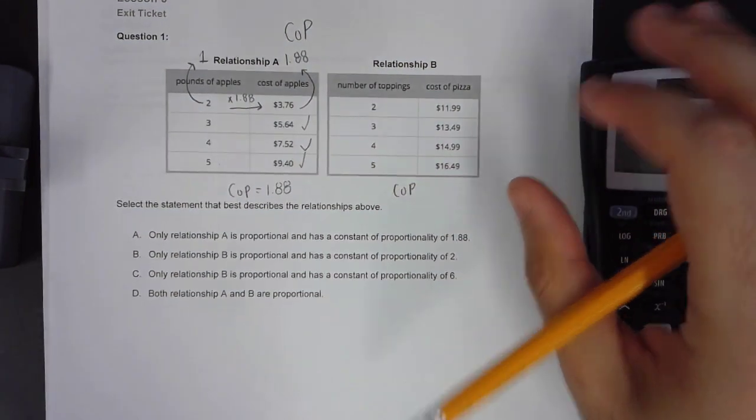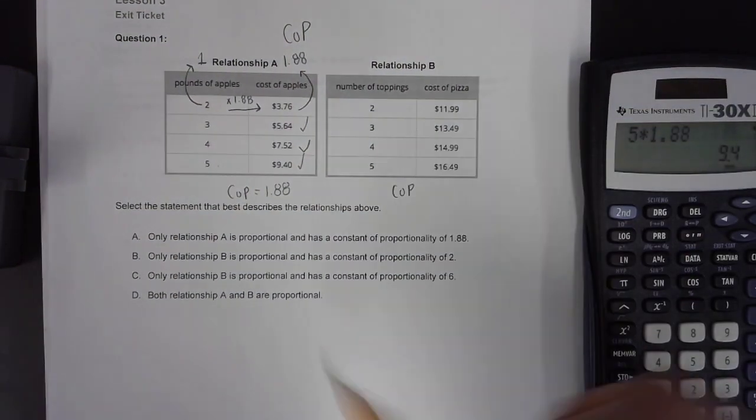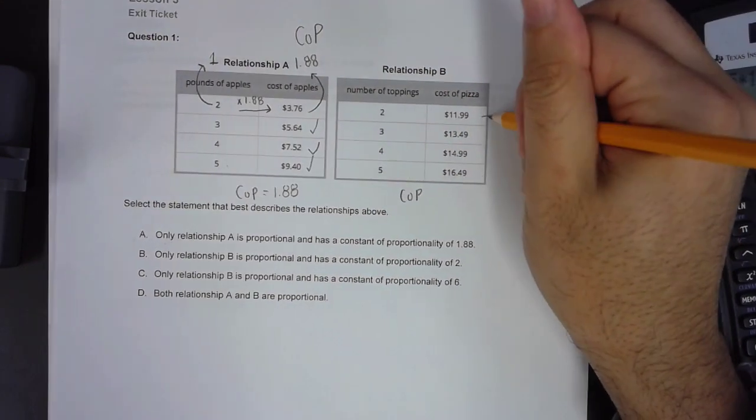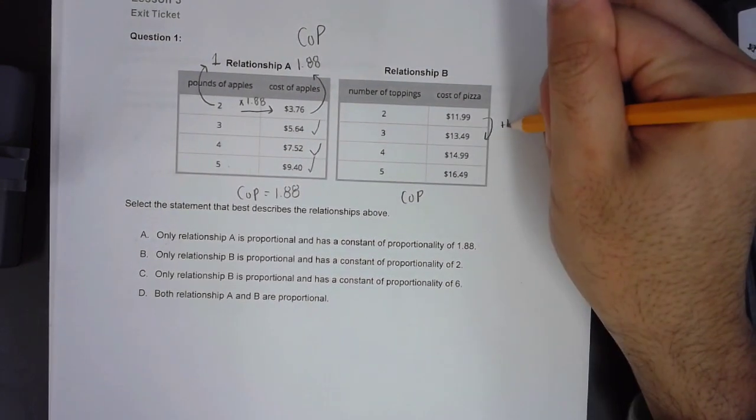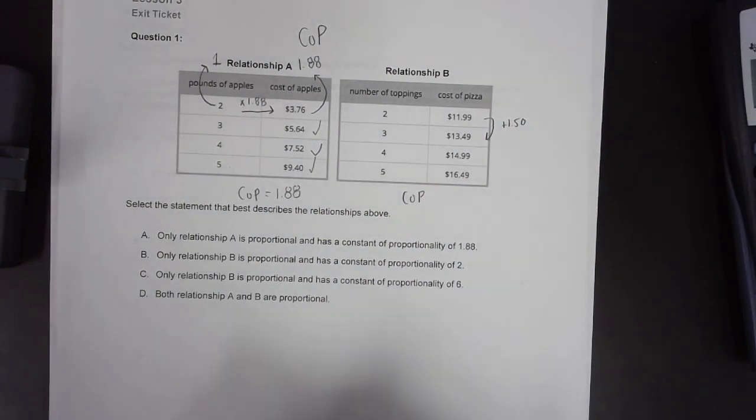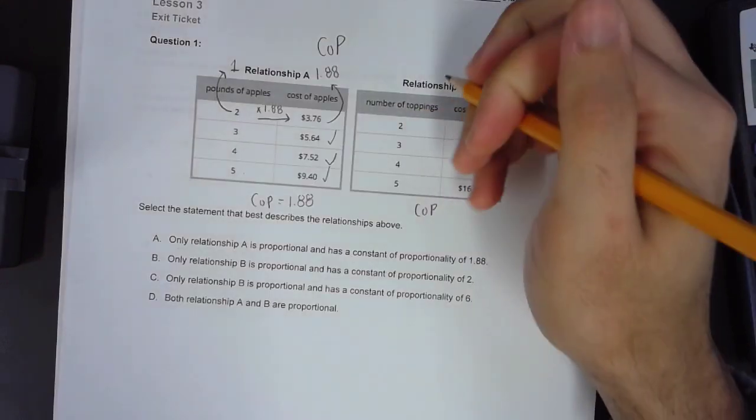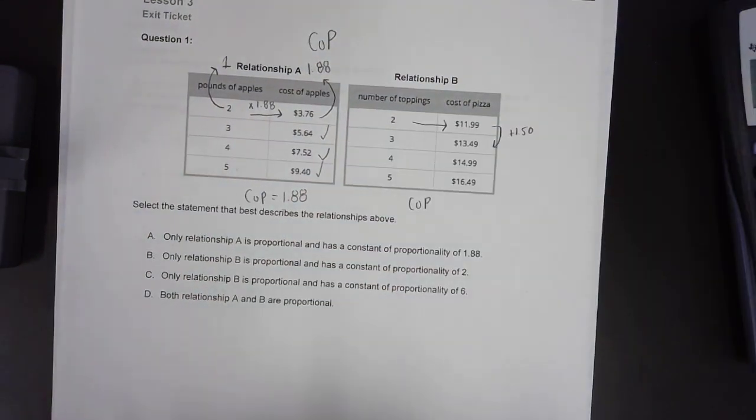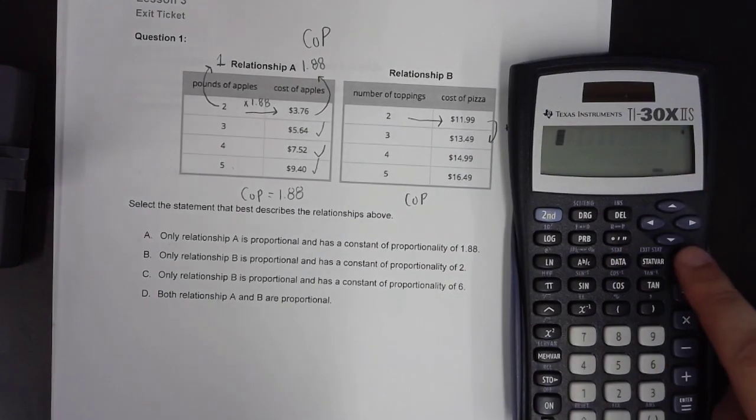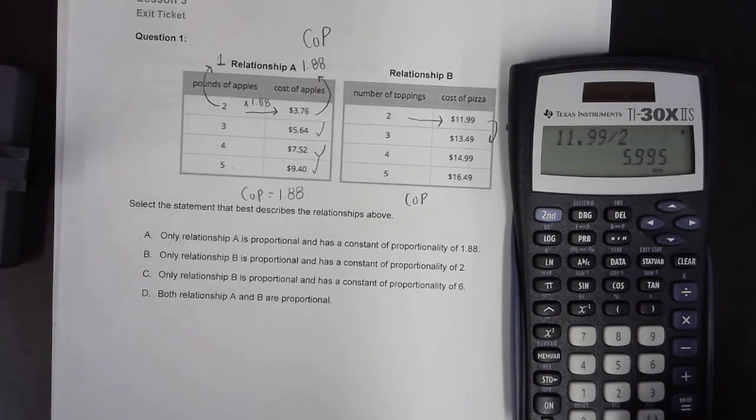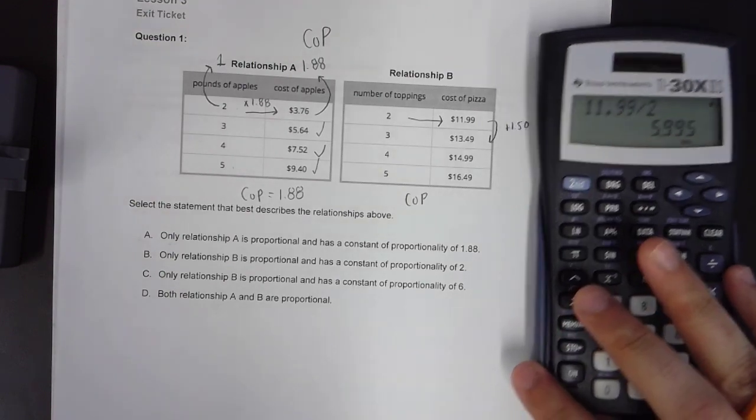Now, for relationship B, I'm noticing a little bit of a pattern. I'm noticing that every time I add a topping, I'm adding $1.50 to my price. Although I do see a pattern, I'm not sure yet if this is a proportional relationship. If I wanted to determine what I need to multiply my number of toppings by in order to get to my cost of pizza, I would do $11.99 divided by 2. And I get to a kind of weird number, but it's 5.995.